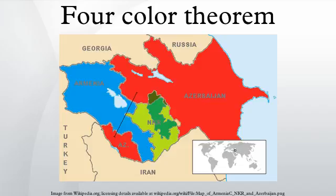Appel and Haken concluded that no smallest counterexample exists because any must contain, yet does not contain, one of these 1,936 maps. This contradiction means there are no counterexamples at all and that the theorem is therefore true. Initially their proof was not accepted by all mathematicians because the computer-assisted proof was infeasible for a human to check by hand. Since then the proof has gained wider acceptance, although doubts remain. To dispel remaining doubt, a simpler proof using the same ideas and still relying on computers was published in 1997 by Robertson, Sanders, Seymour, and Thomas. Additionally, in 2005, the theorem was proven by Georges Gonthier with general-purpose theorem-proving software.